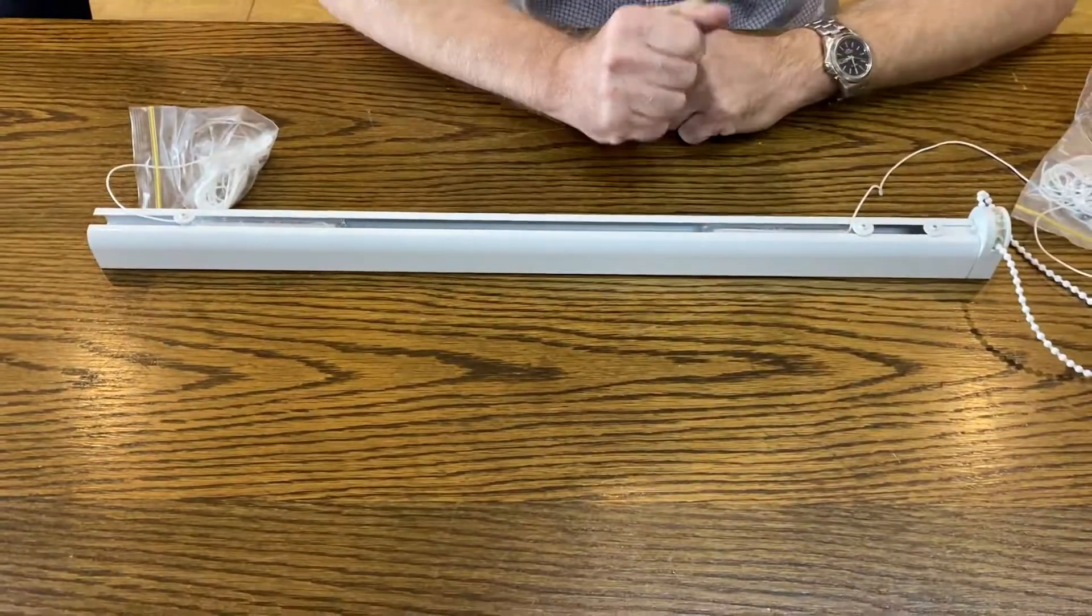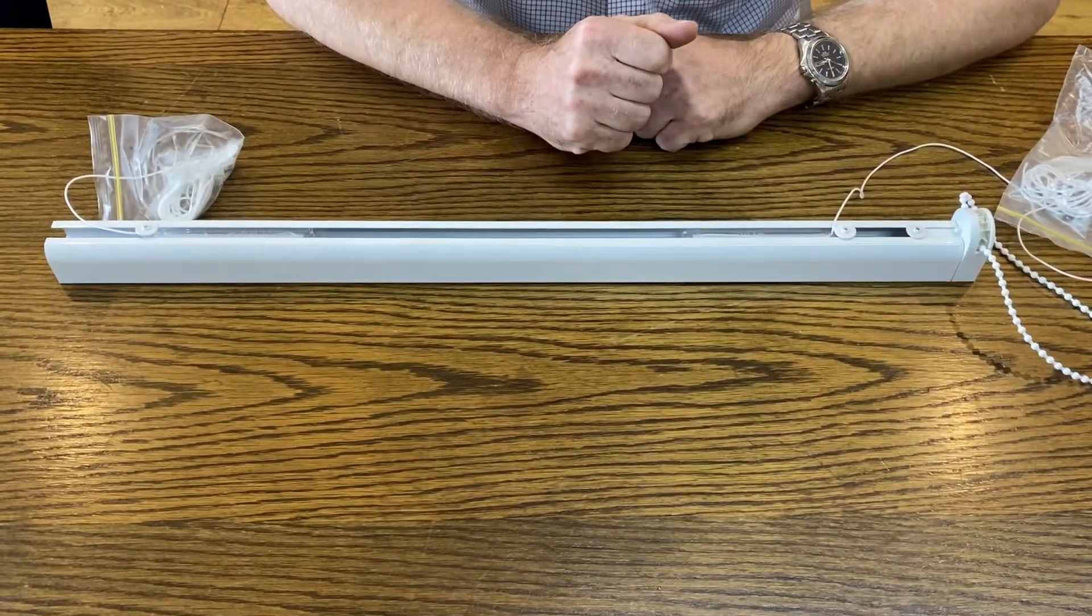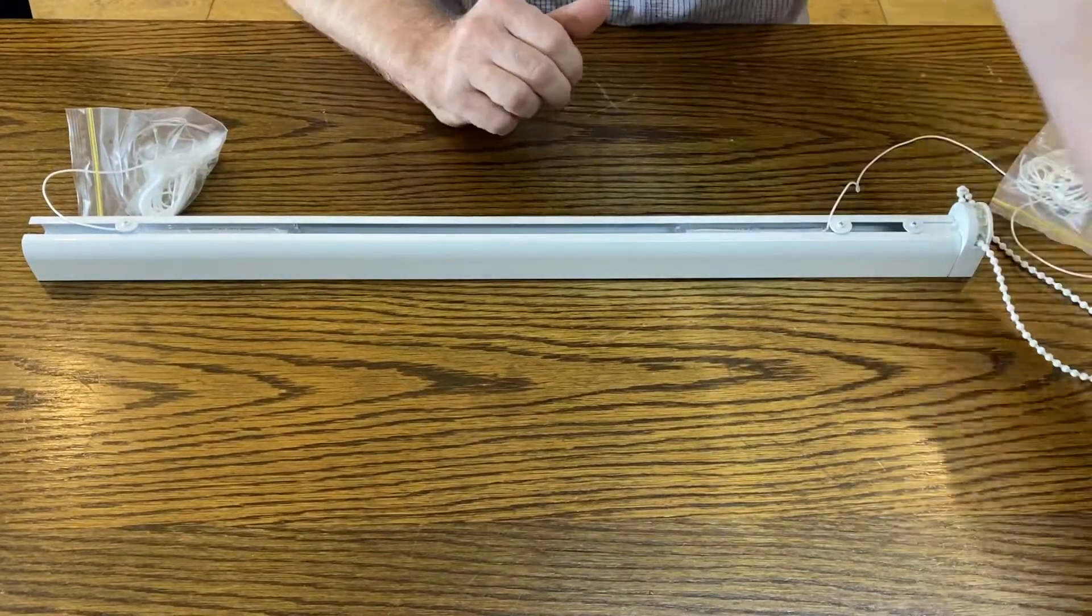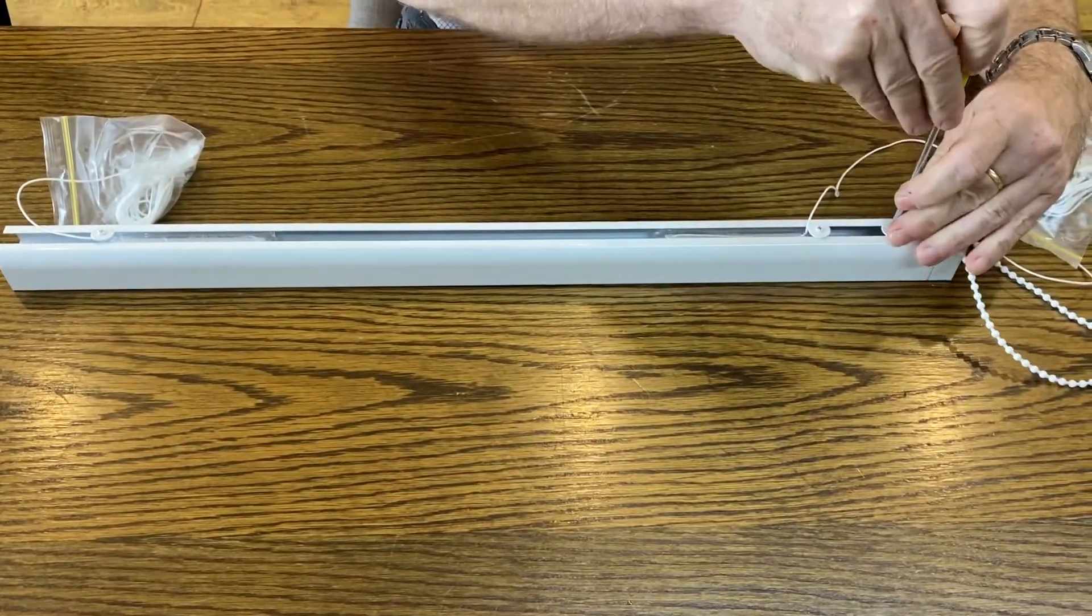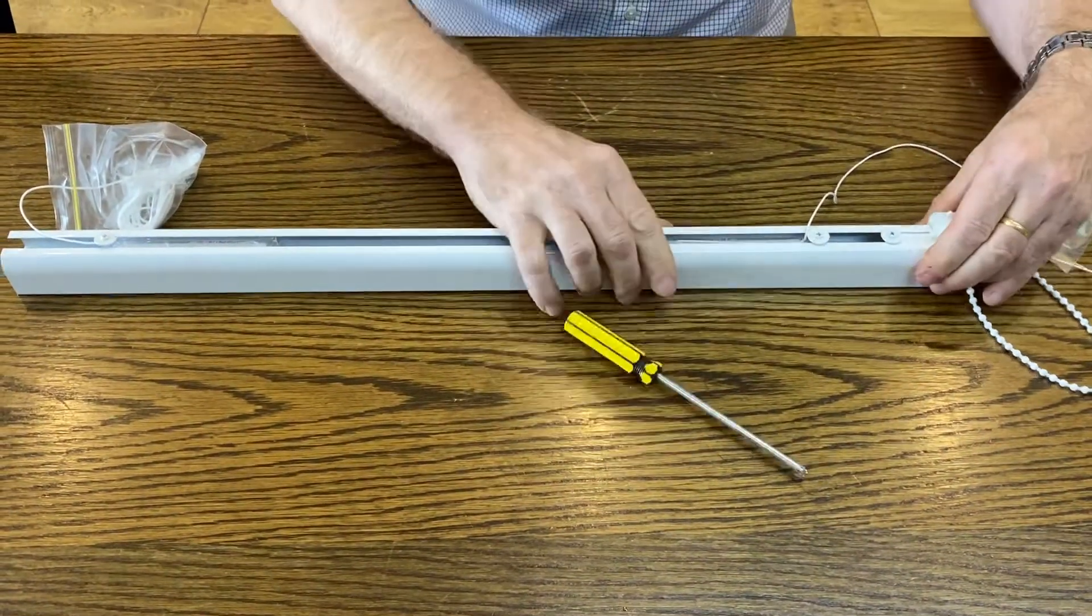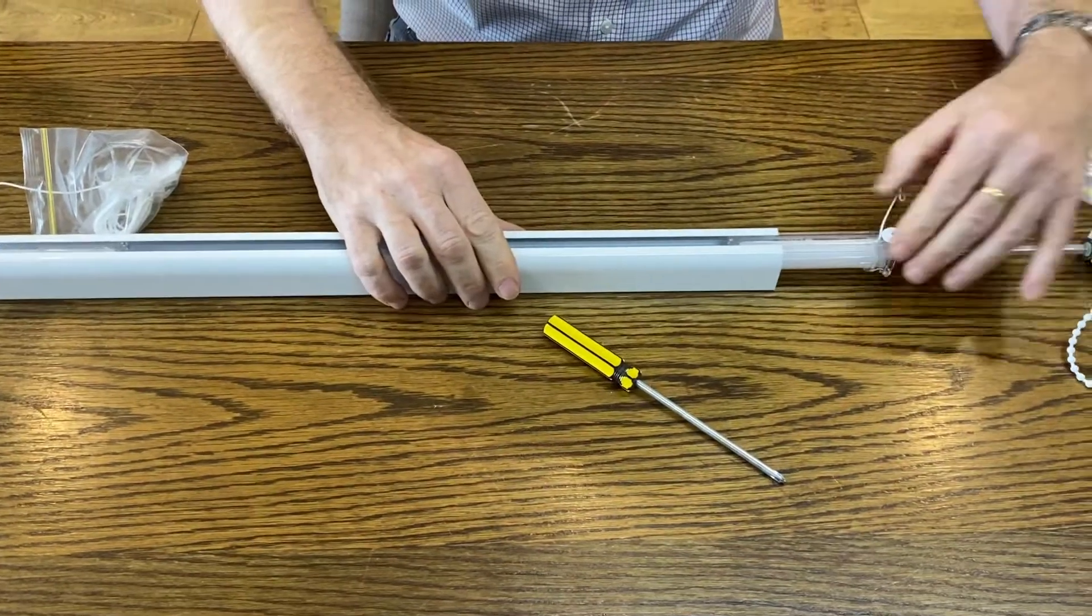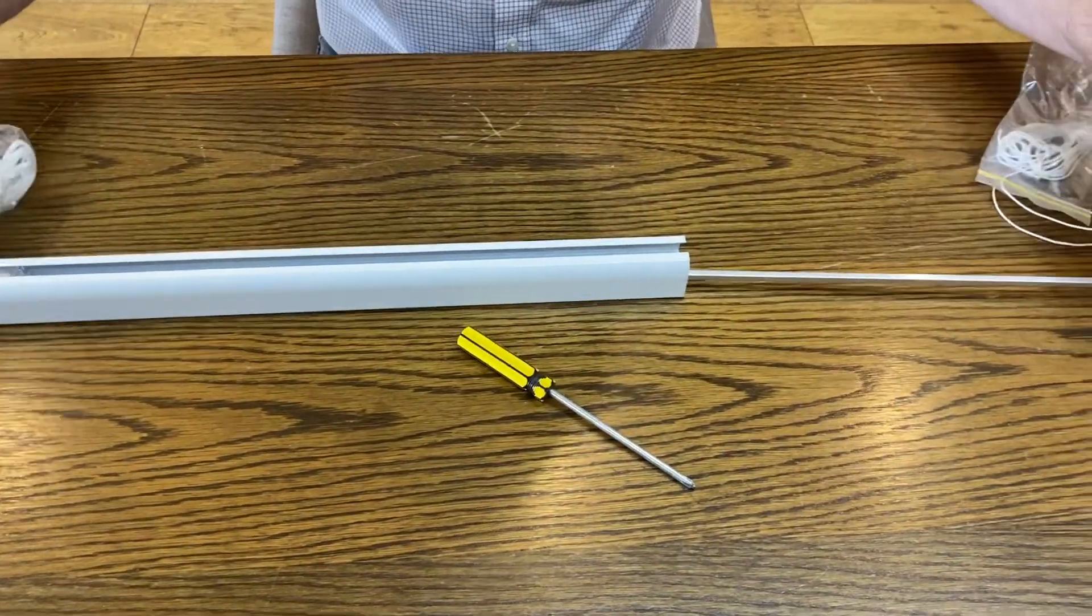If this is the case, we need to now remove the spools from the headrail. So simply undo the screw and pull the mechanism out.